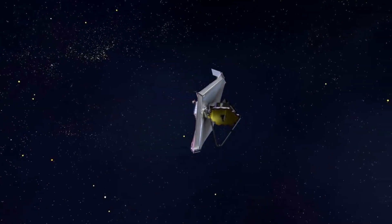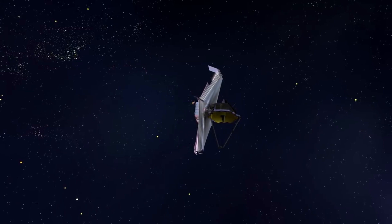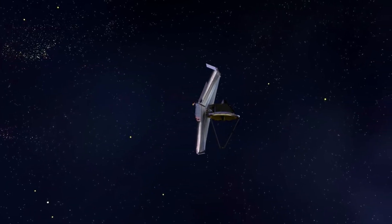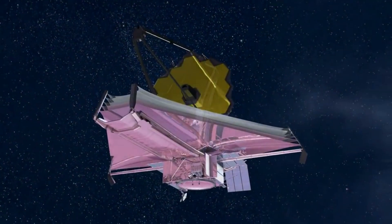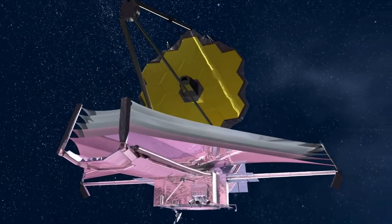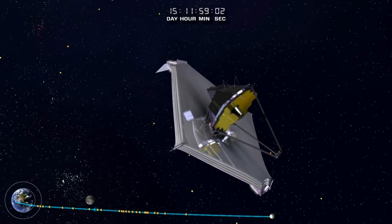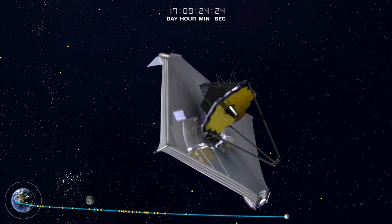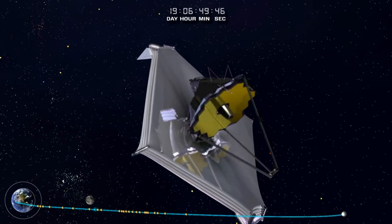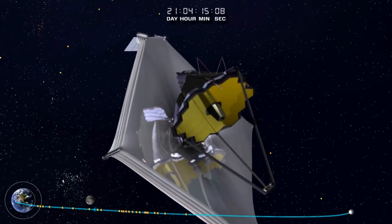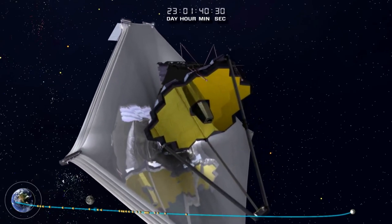NIRSPEC is the only instrument without a camera. Spectrographs spread light out into a spectrum, so that the brightness of each individual wavelength can be measured. Webb has a number of different types of spectrographs, each designed for a slightly different purpose. All four of Webb's instruments have spectrographs. Coronagraphs are opaque disks used to block the bright light of stars, in order to detect the much fainter light of planets and debris disks orbiting the star.